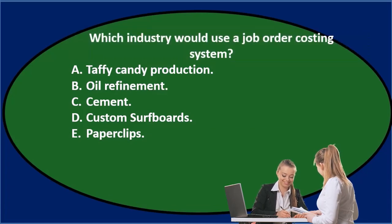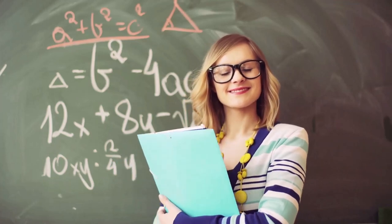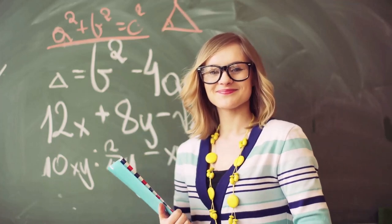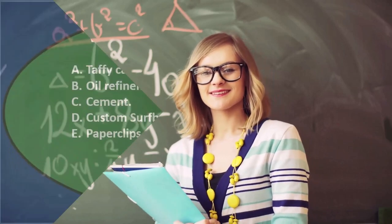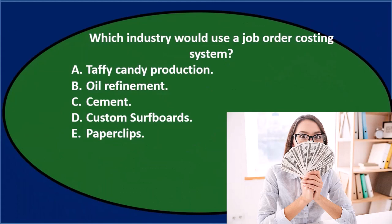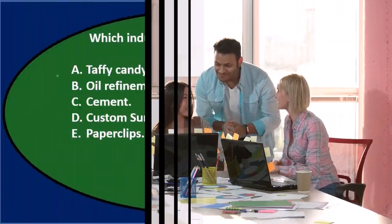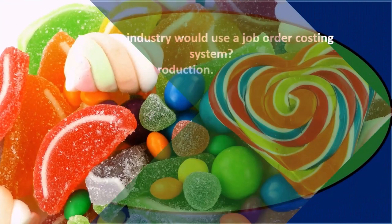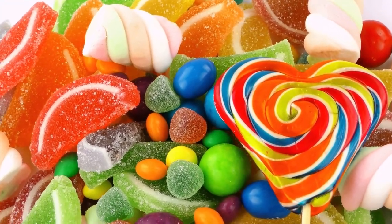Which industry would use a job order costing system? Again, you're contrasting in your head — there are two types of costing systems: job cost and process cost. We would typically use a job cost when there's differentiation in the types of inventory we are making, as opposed to a process cost where everything is all the same and we apply the cost by process rather than by individual job. So if we think through that, A. taffy candy production — if we're talking about just normal mass production...